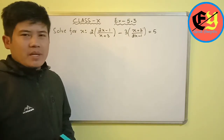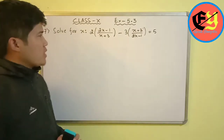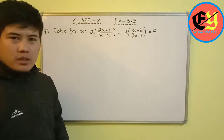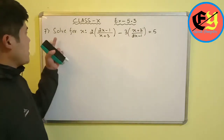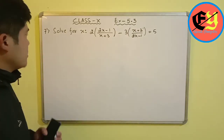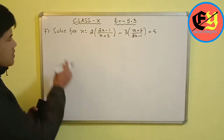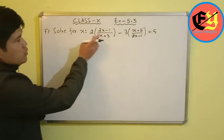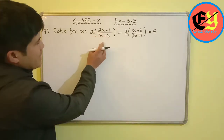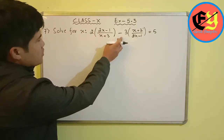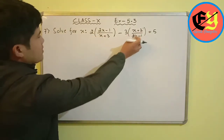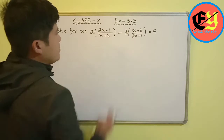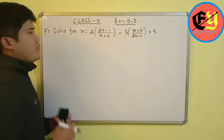Hello everyone. Today I am in Class 10, Quadratic Equations, Exercise 5.3. We will start with question 7 and solve for x. The equation is: 2 times (2x minus 1)/(x plus 3) minus 3 times (x plus 3)/(2x minus 1) equals 5. We will use the quadratic formula.